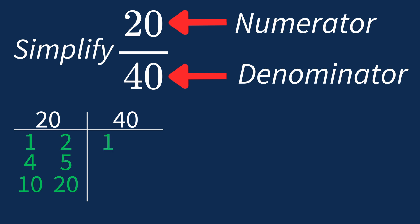For 40, the factors are 1, 2, 4, 5, 8, 10, 20, and 40.